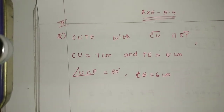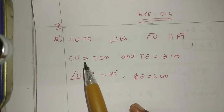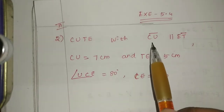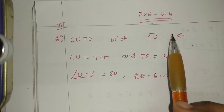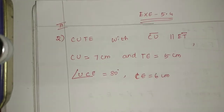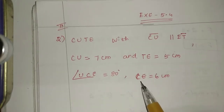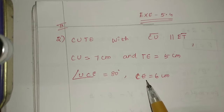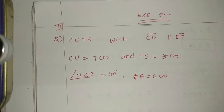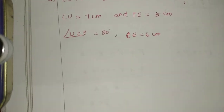Hello friends, I am Saranya. We are going to talk about 8th standard maths, chapter 5, exercise 5.4. Trapezium CUTQ: CU is parallel to EF. CU is equal to 7 cm, TE is 5 cm, angle UCE is equal to 80 degrees, and CE is equal to 6 cm. This is the first rough diagram.